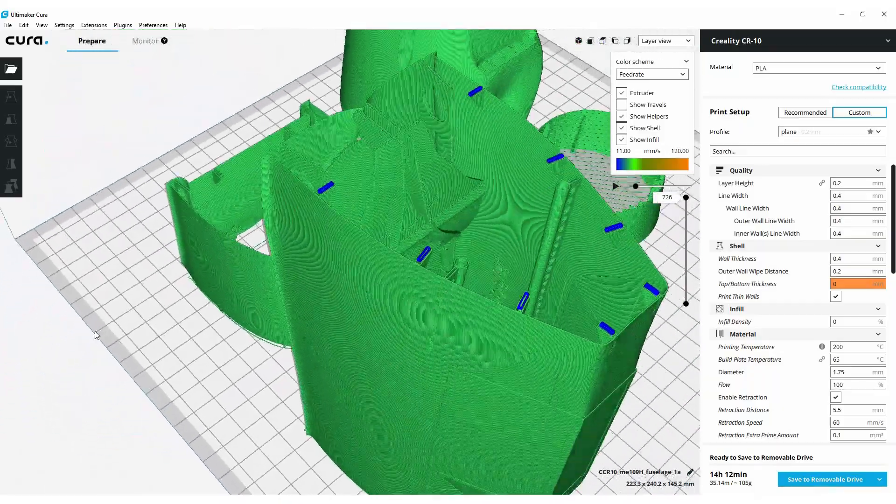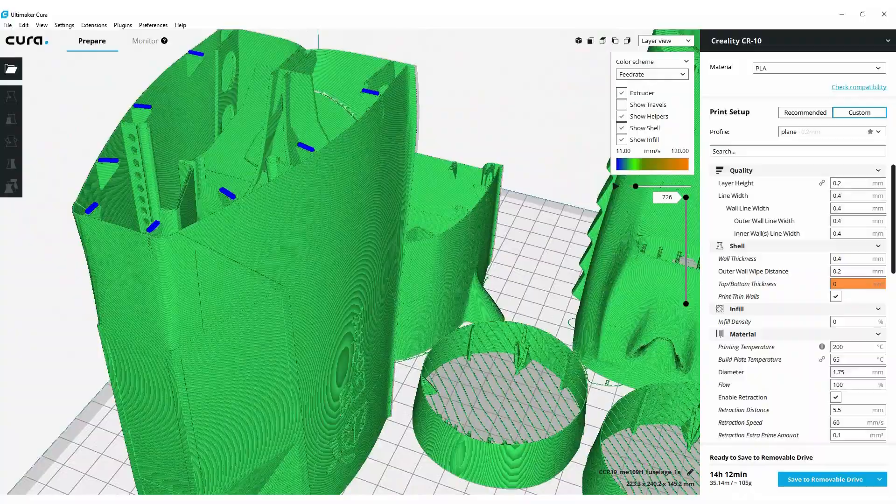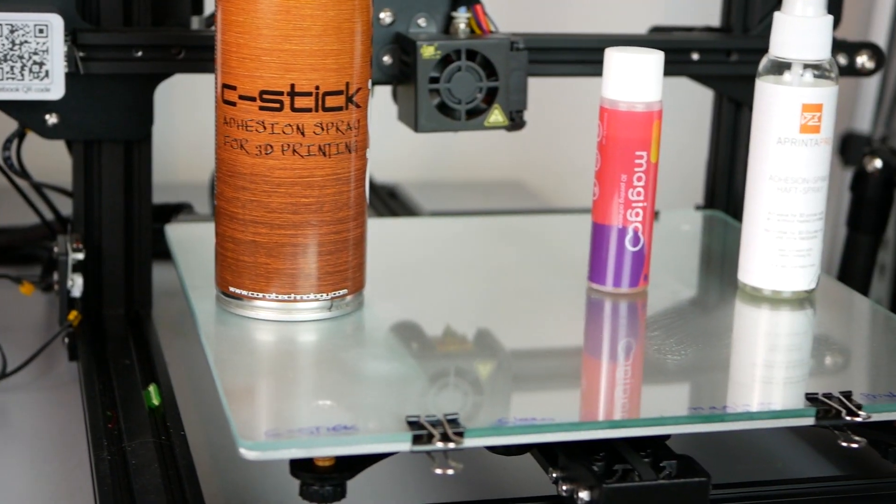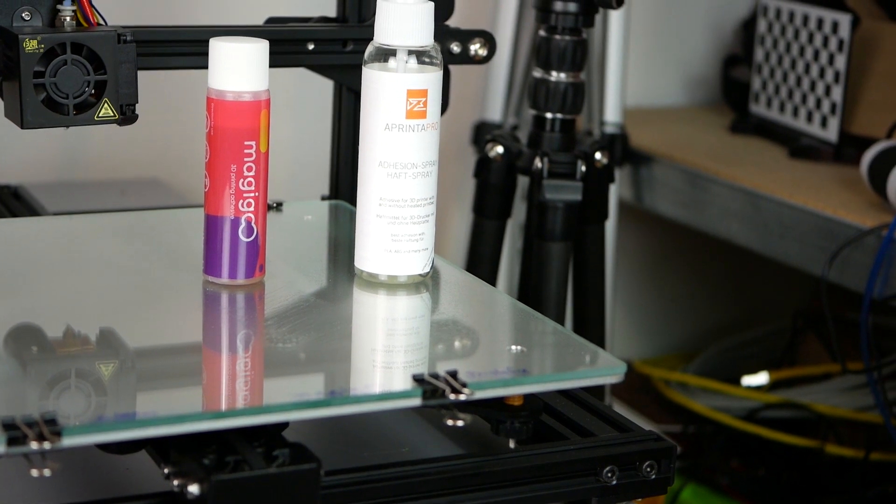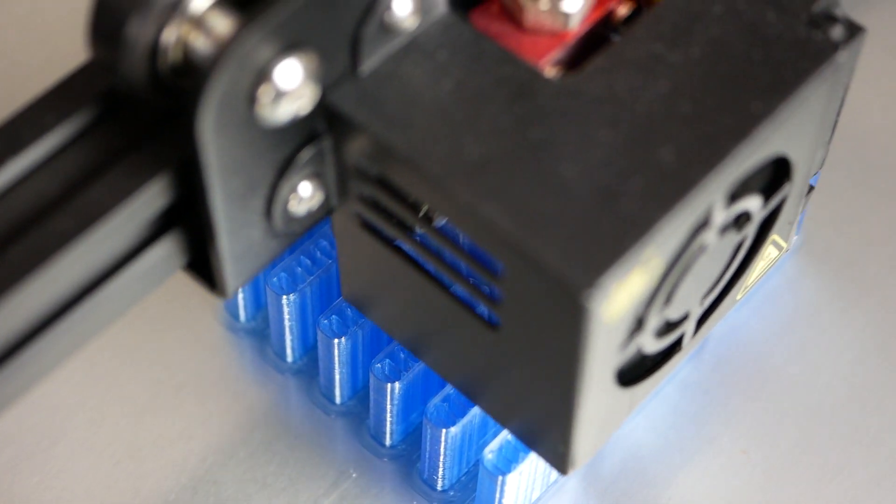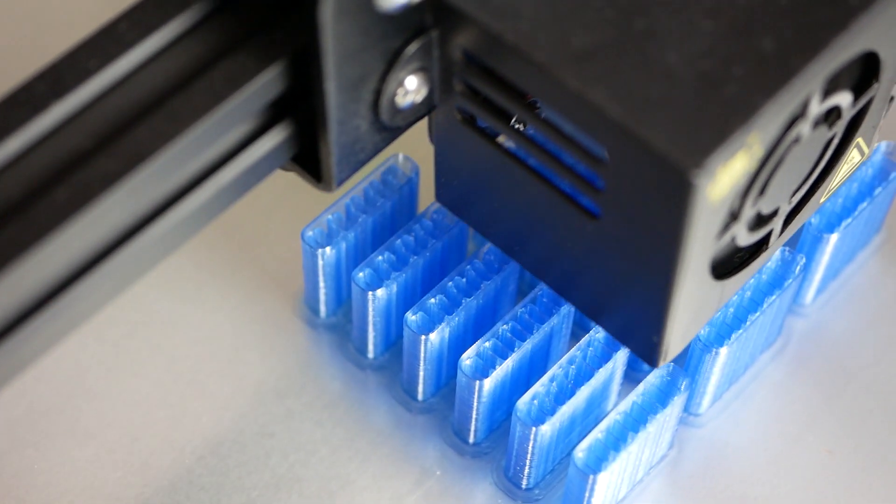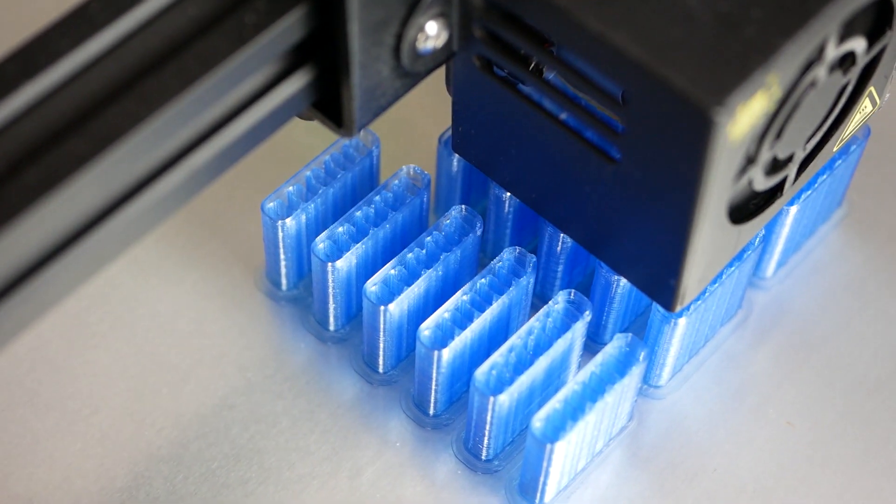The next video will then cover how to set up Cura so that the model is sliced properly and with which method I got my parts to stick to the glass bed the best way. So there is an enormous variety of different adhesives available, each having different advantages and disadvantages.